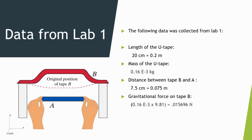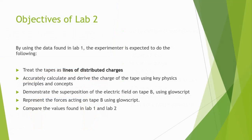By using this data found in lab 1, the experimenter is expected to do the following: Treat the tapes as lines of distributed charges. Accurately calculate and derive the charge of the tape using key physics principles and concepts. Demonstrate the superposition of the electric field on tape A using GlowScript and represent the forces acting on tape A using GlowScript. Compare the values found in lab 1 and lab 2 and briefly deduce which of the two is more accurate.